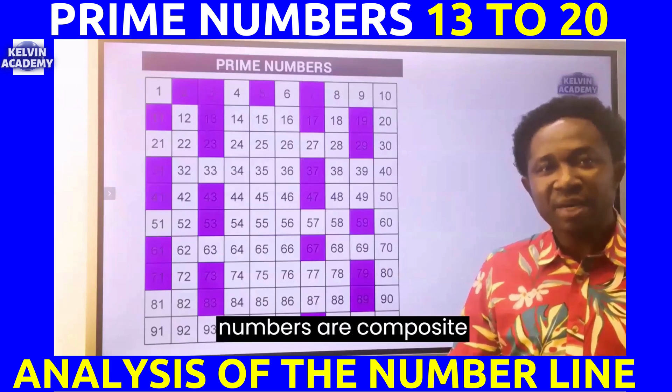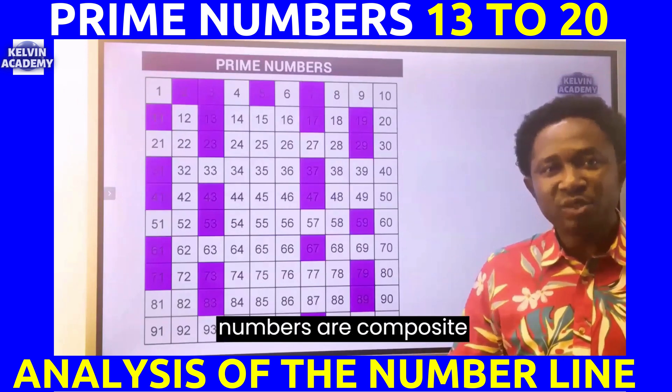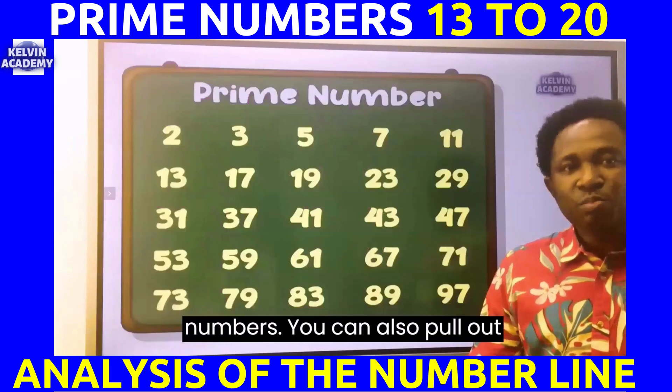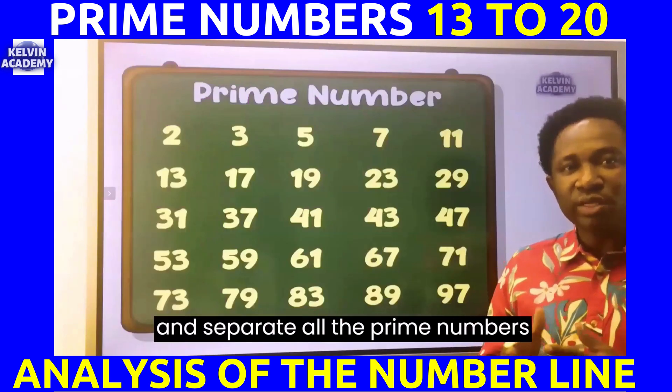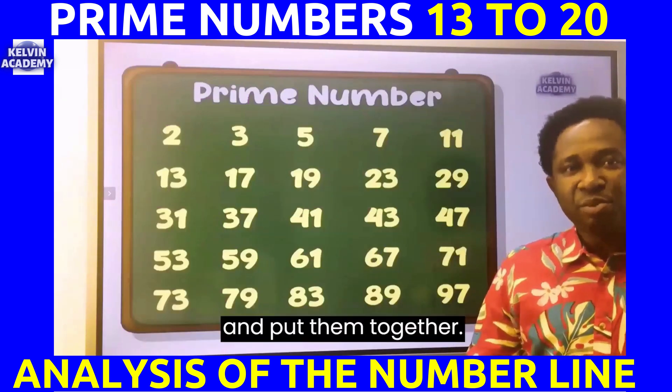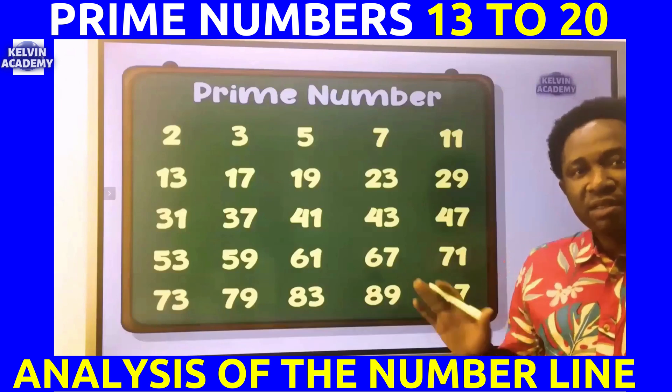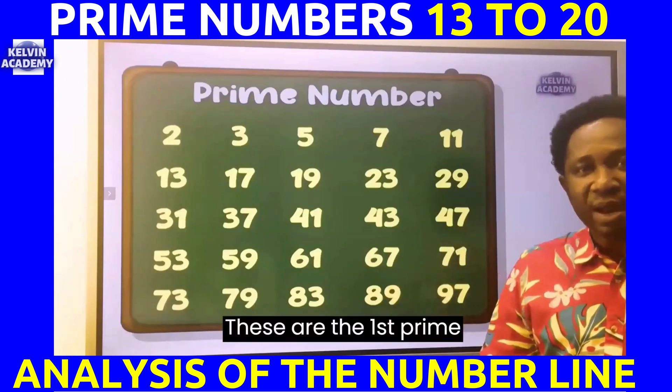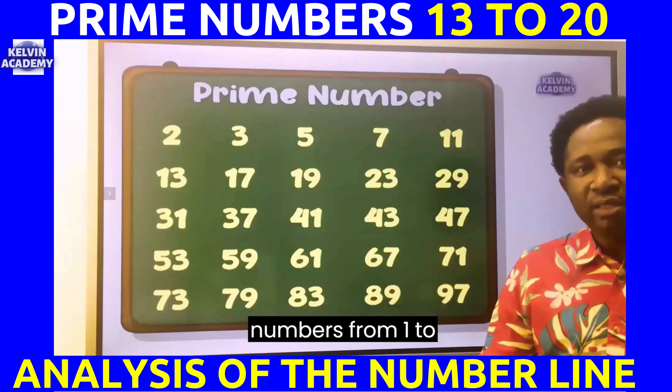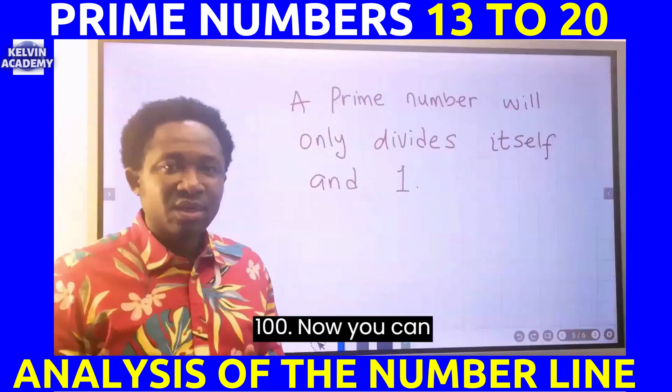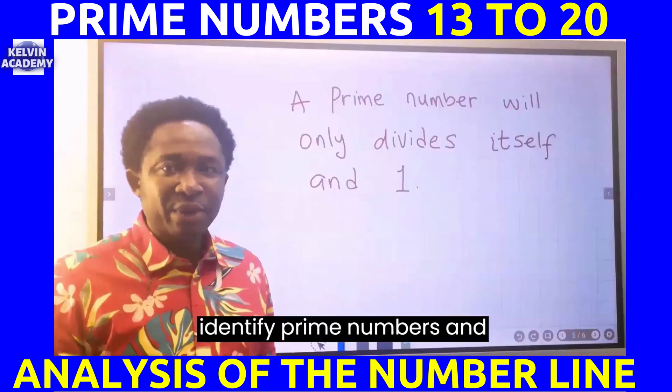The remaining numbers are composite numbers. You can also pull out and separate all the prime numbers and put them together. These are the first prime numbers from 1 to 100. Now you can identify prime numbers and composite numbers using this definition.